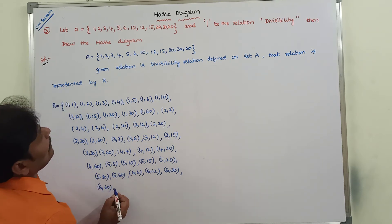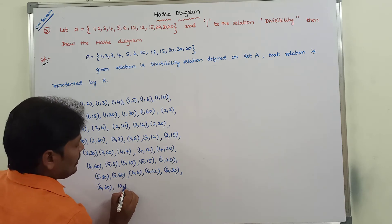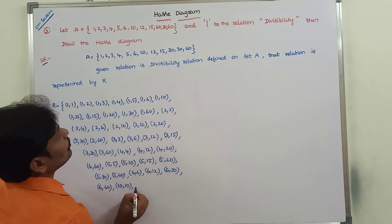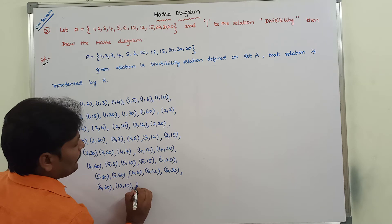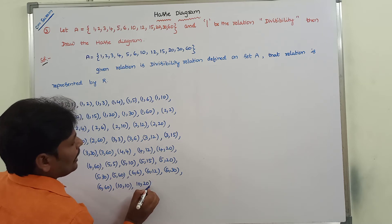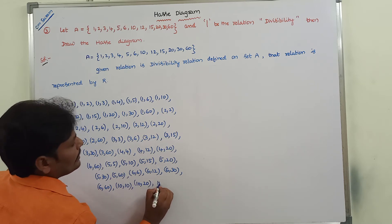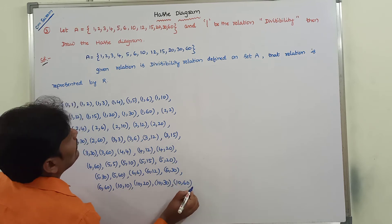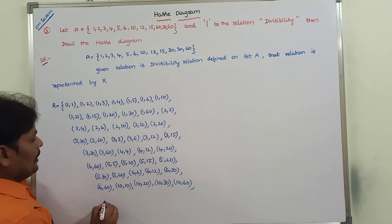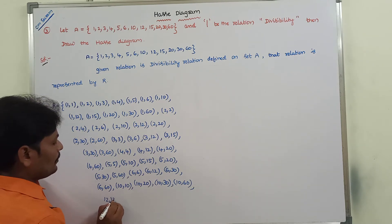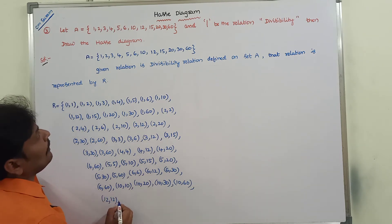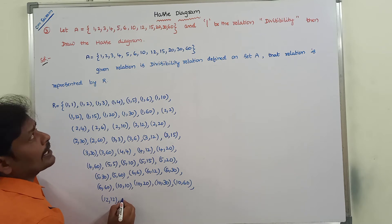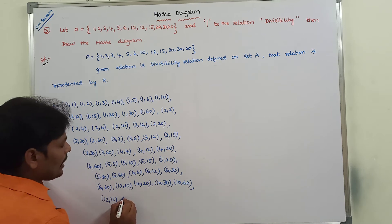Next element is 10: 10 divides 10. 10 does not divide 12. 10 does not divide 15. 10 divides 20. 10 divides 30. 10 divides 60. Next element is 12: 12 divides 12. 12 does not divide 15. 12 does not divide 20. 12 does not divide 30. 12 divides 60.